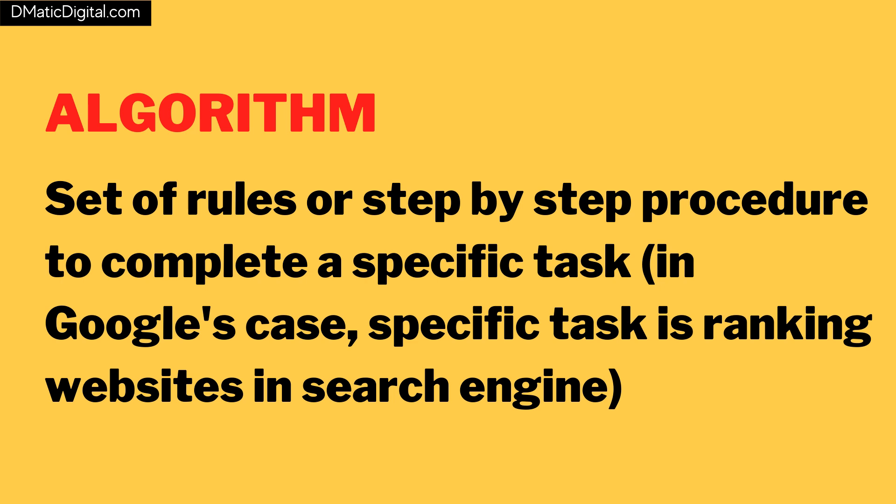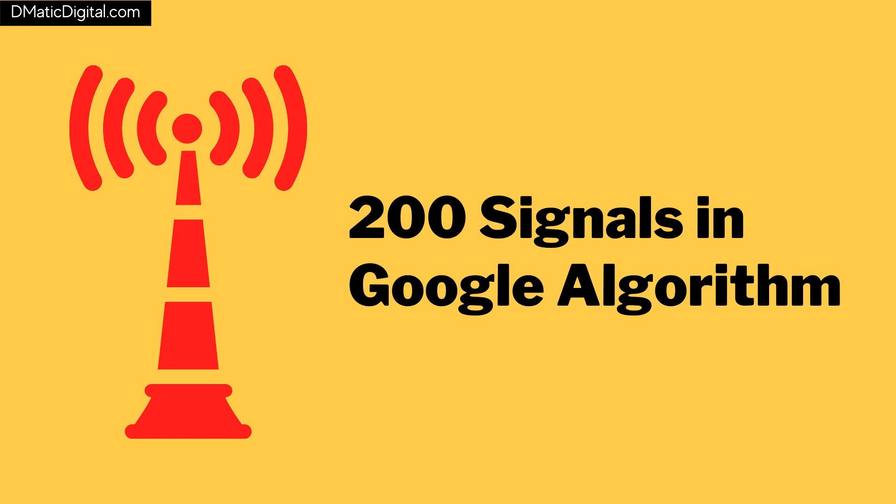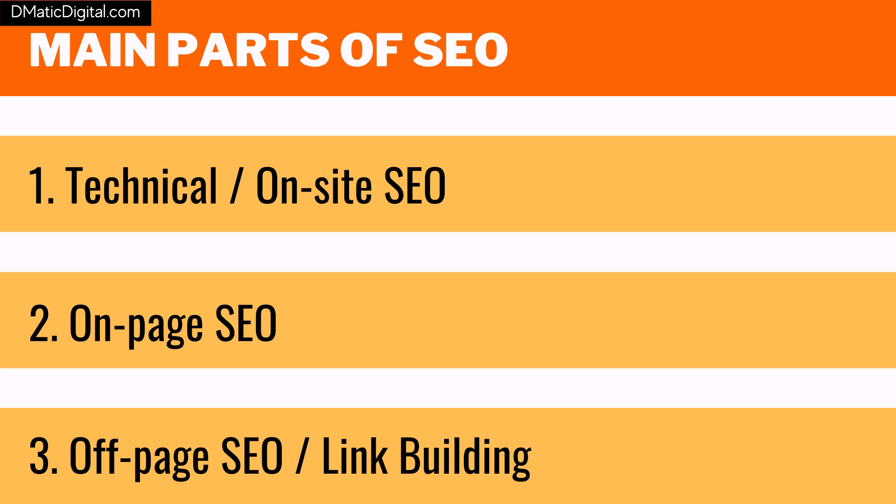Now let's see how to do SEO and get lots of targeted traffic on your website. To rank any website on Google or any search engine, you need to follow an algorithm created by Google. An algorithm is a set of rules or step-by-step procedure to complete a specific task — in SEO, that task is ranking a website. There are around 200 factors or signals that Google's algorithm uses to rank websites worldwide with different keywords. But not all 200 signals have equal importance — some play a major role, others are least important.